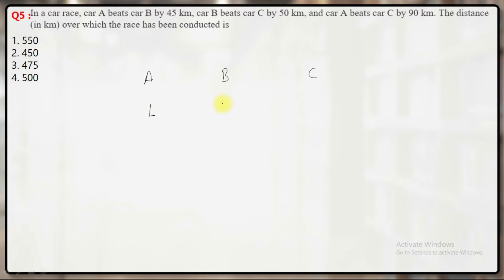So, by the time A covers L, B will cover L minus 45 because A has beaten B by 45 kilometers. Same is the case with B and C. By the time B covers L, C will be short by 50 kilometers.